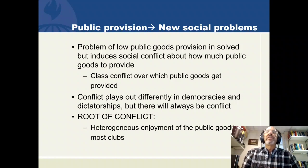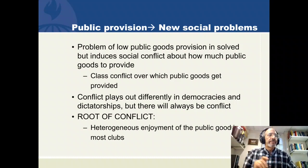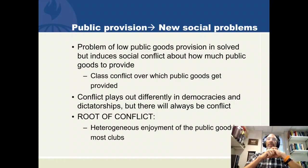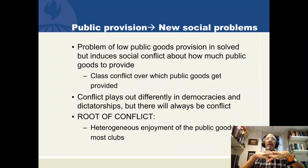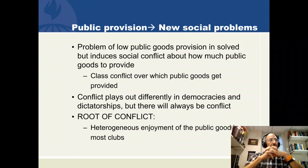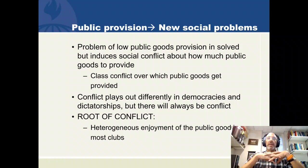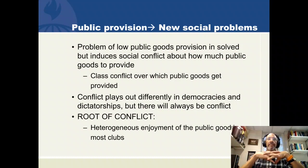A real disadvantage of command and control is that it doesn't have an automatic way to get a signal about how much each victim or polluter values the pollution problem. Information about how utility scales with pollution is known only to the victim, and it's revealed when they actually make trades in well-functioning markets. Regulators who don't listen to this information won't get it right and are likely to overdo the regulation. Public provision creates social problems: if we solve a lack of public goods with public provision, we'll have a real conflict in every club and government over what public goods to provide and how much, and this conflict stems from heterogeneous enjoyment of public goods.